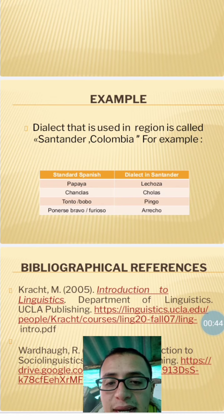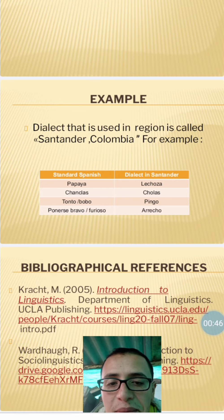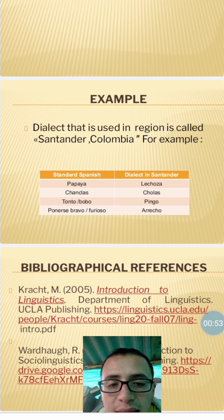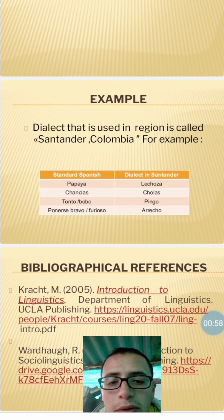For example, in standard Spanish: papaya. But in the dialect of Santander: lechosa. Standard Spanish: chanclas. Dialect in Santander: cholas. Standard Spanish: tonto, bobo. Dialect in Santander: pingo.